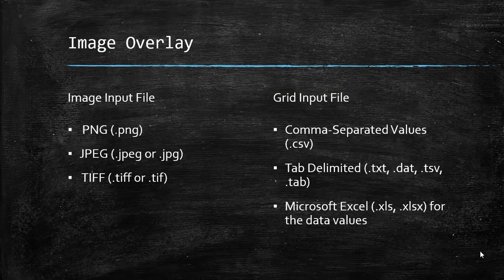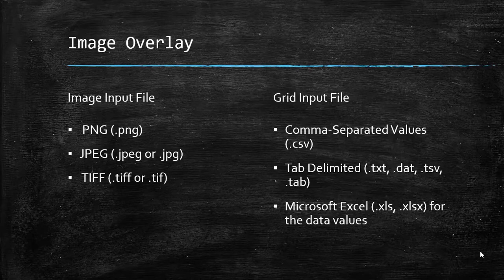The image overlay function takes in comma-separated files, tab-delimited files, and Microsoft Excel files for the data values. For the image, it can take PNG, JPEG, or TIFF file formats.